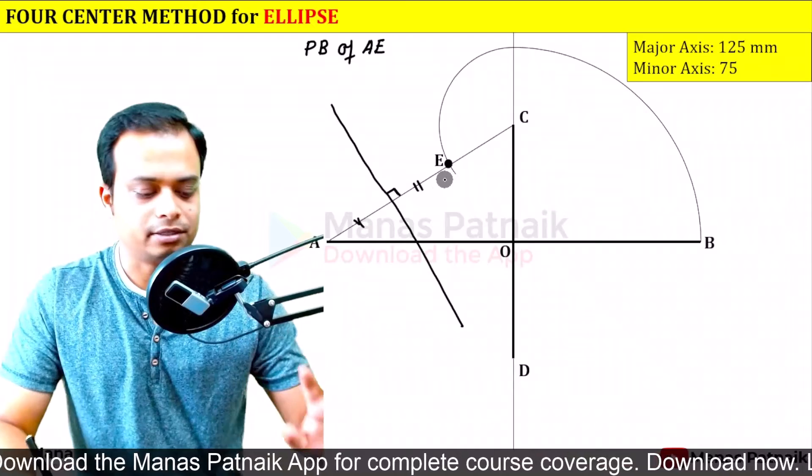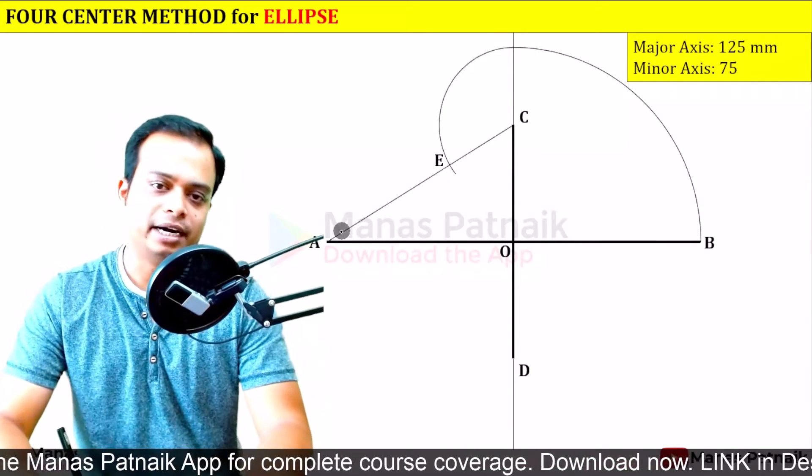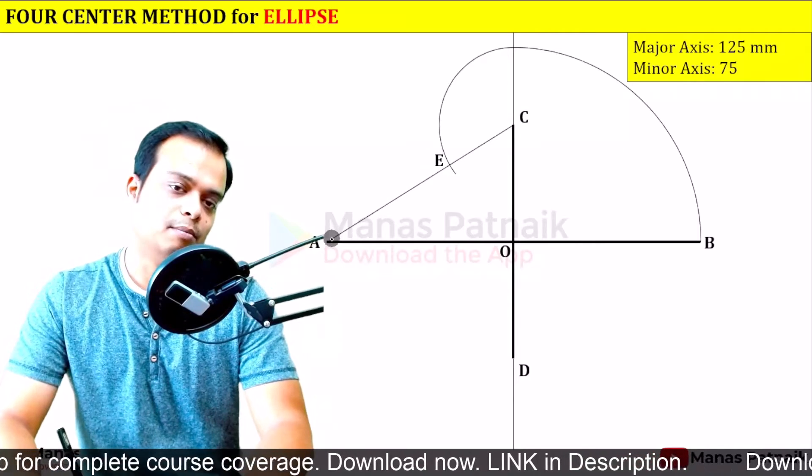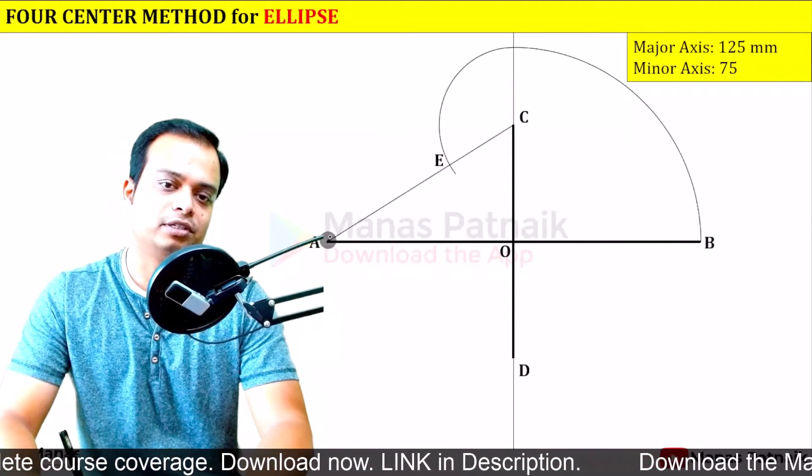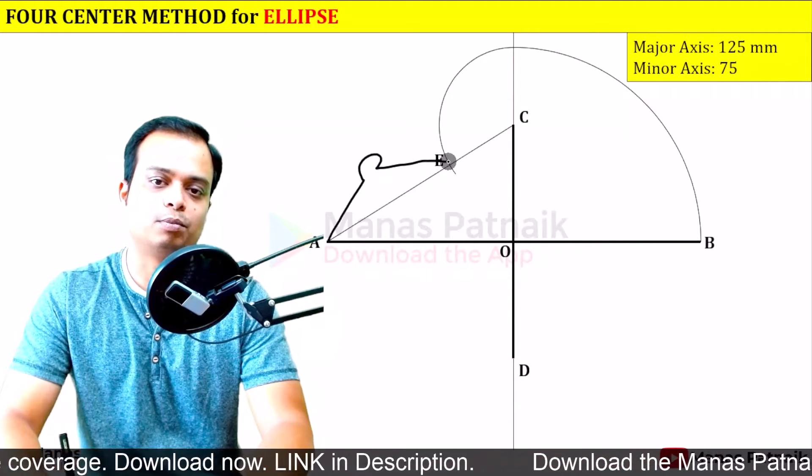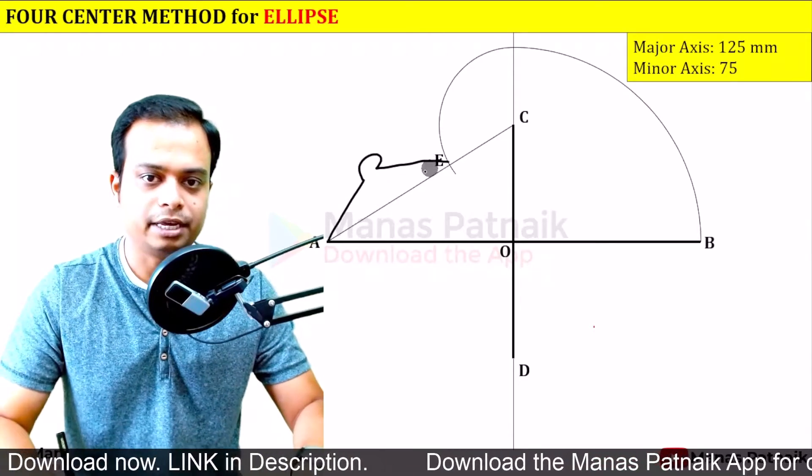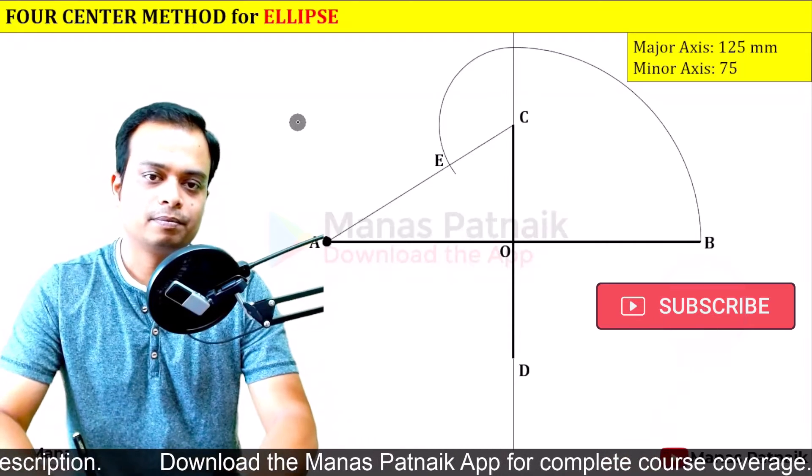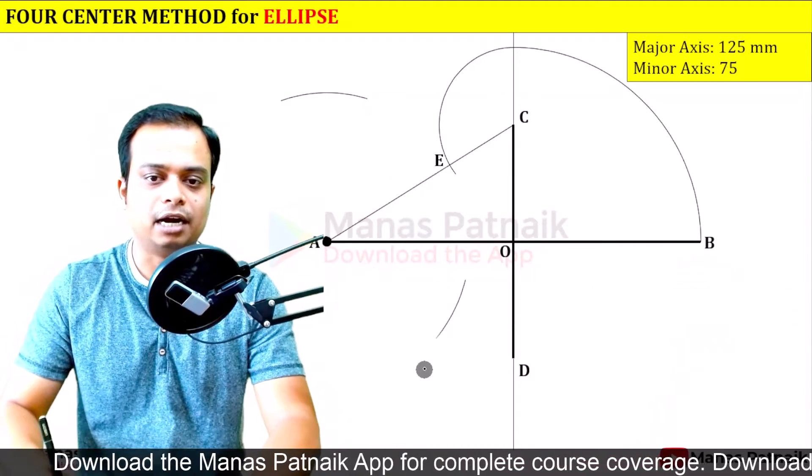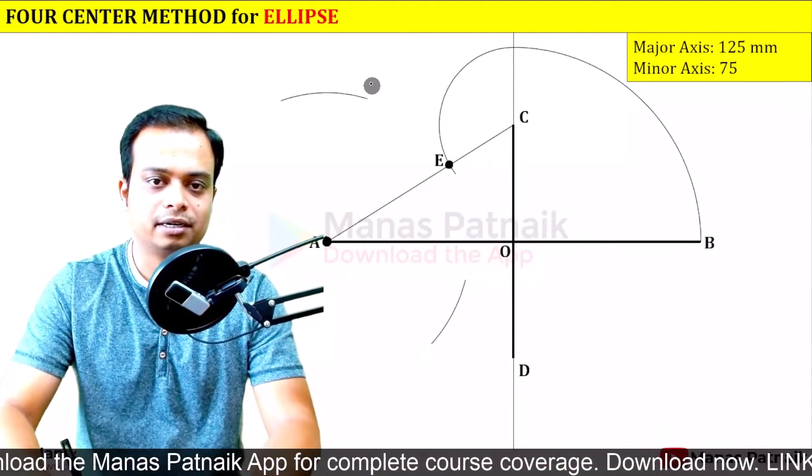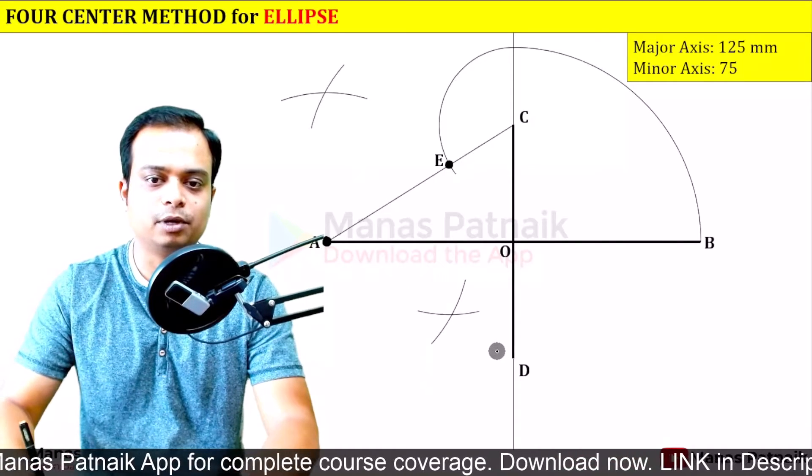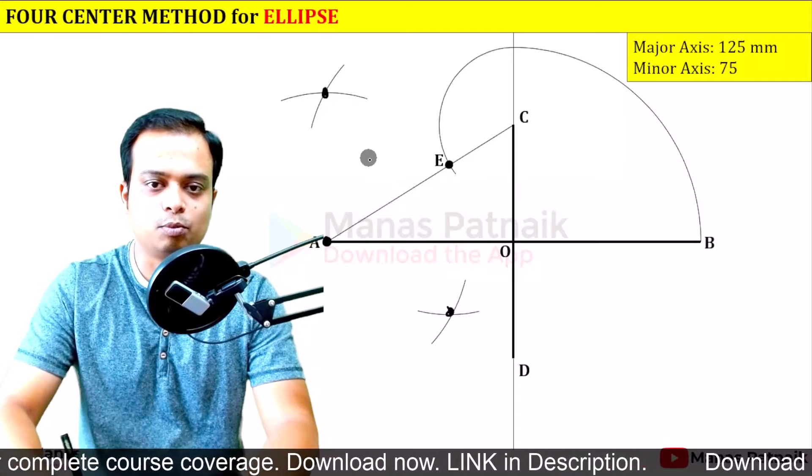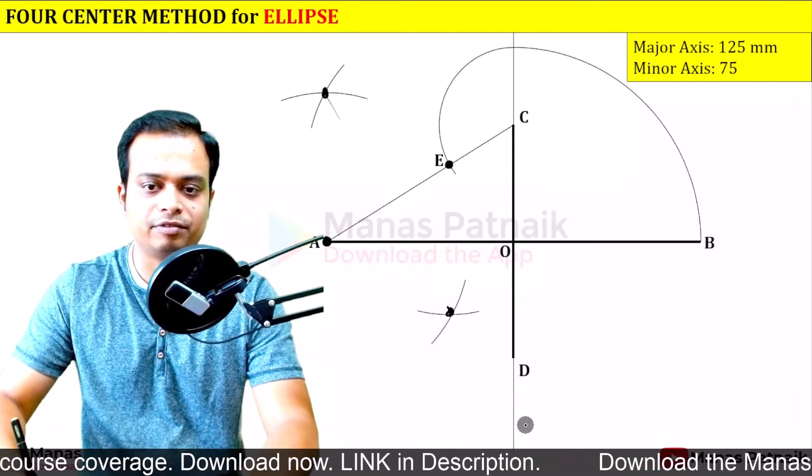So that's the perpendicular bisector. And for that, I would suggest take an arc which is more than half of AE, or you can simply take AE itself, no problem. Now with A as center, put an arc above and below. Now with E as center, cut above, cut below. What you have is these two points. Connect these two points and then extend until you reach somewhere here.